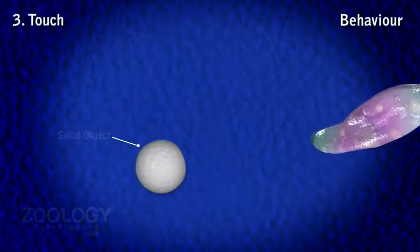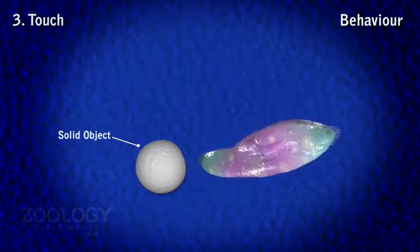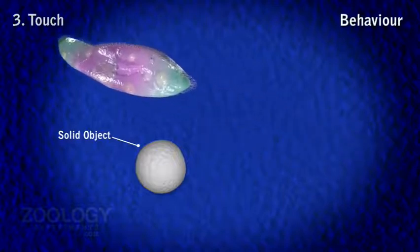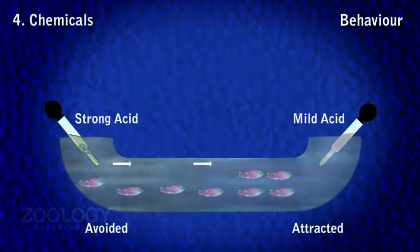Response number three is to touch, called thigmotaxis, when the more sensitive anterior end is strongly touched with a solid object.